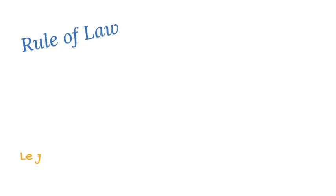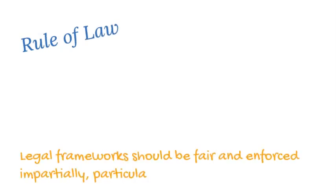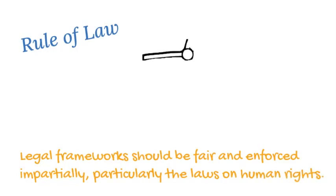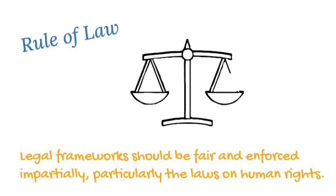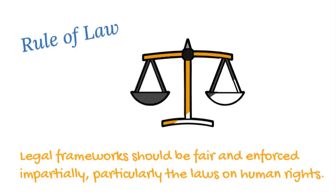Rule of Law. Legal frameworks should be fair and enforced impartially, particularly the laws on human rights. It is a hallmark of political maturity but also a requisite for growth and poverty reduction, for there are irreducible minimum levels of governance needed for large-scale investment to occur and for social programs to be supported.